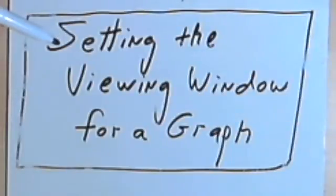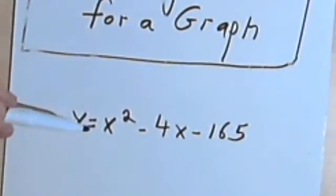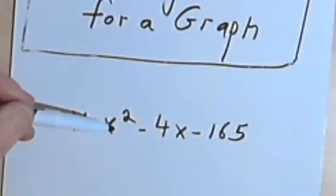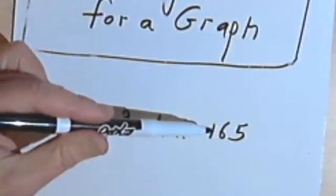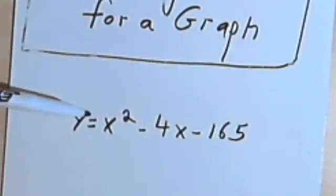This video is going to be about setting the viewing window for a graph. Sometimes you might be given a problem like this. You've got y equals x squared minus 4x minus 165, and you've got a graphing calculator, and you're told to find an appropriate viewing window for this graph.